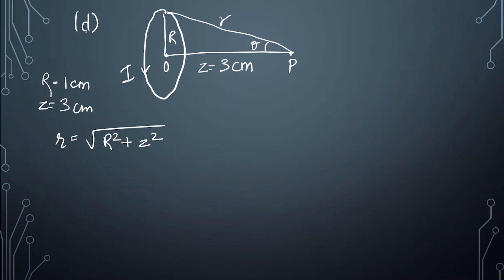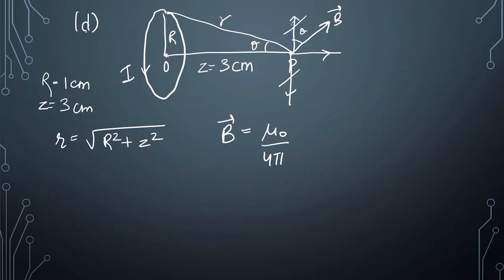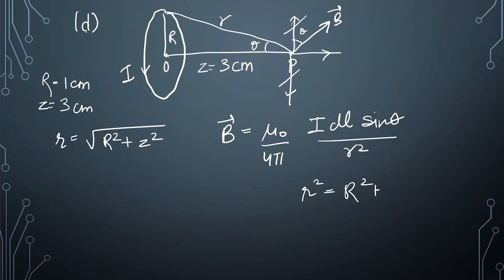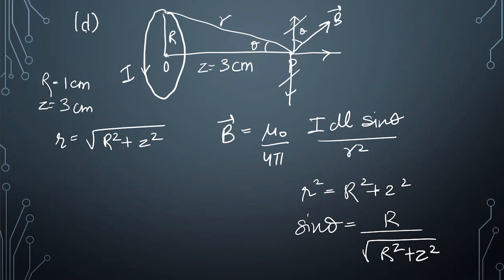Due to symmetry, if we consider the angle theta, the magnetic field B has components where the vertical components cancel out and only the perpendicular components contribute. The expression from Biot-Savart law is dB equal to mu-naught by 4 pi times I dL sine theta over R squared, where R here is the distance from the element to the field point, which can be written in terms of the loop radius and axial distance.